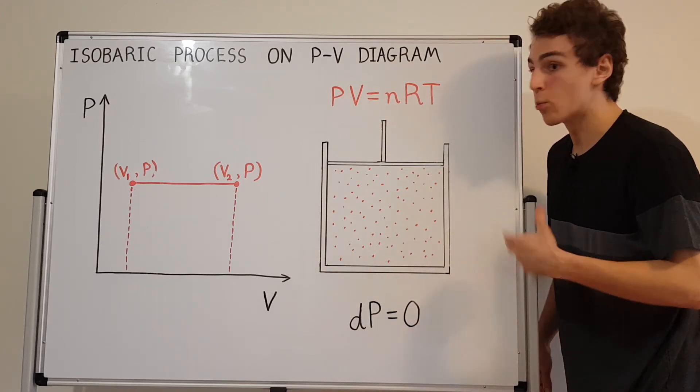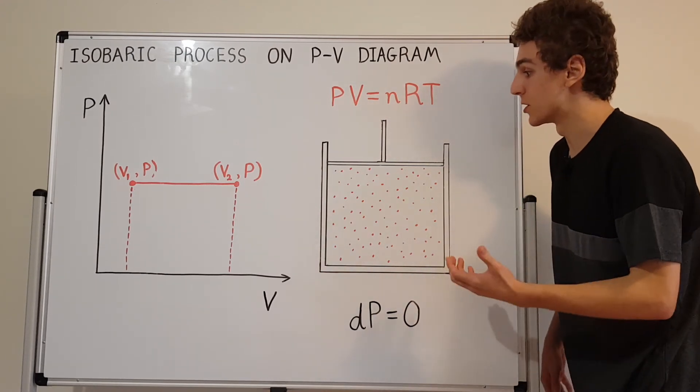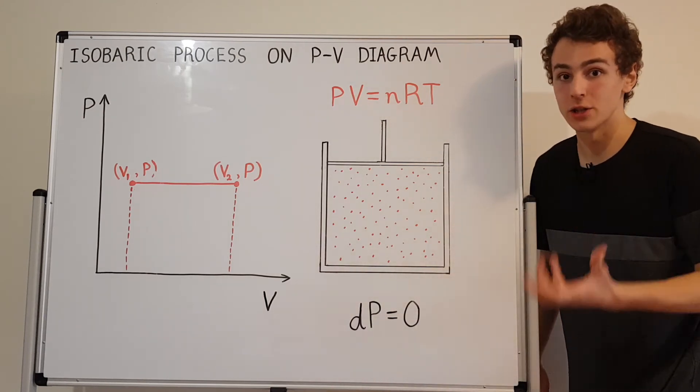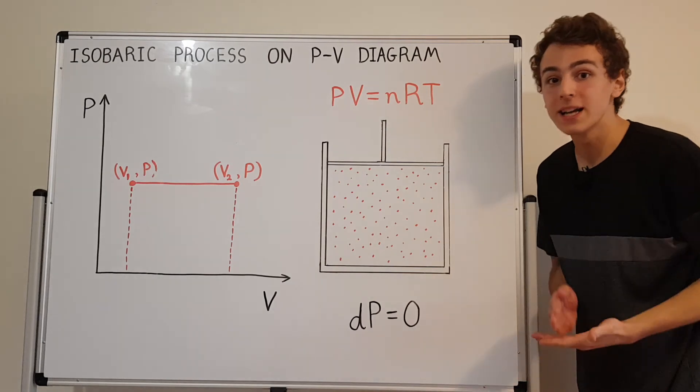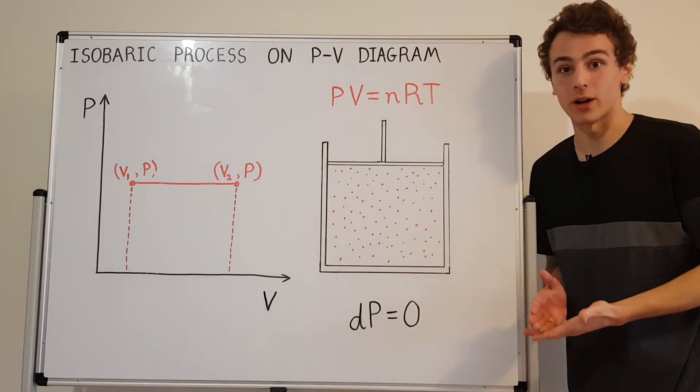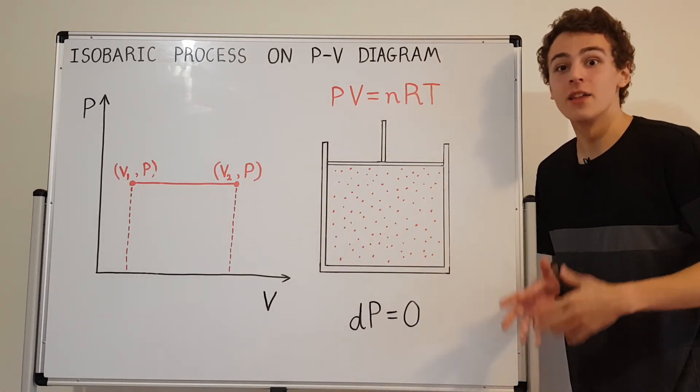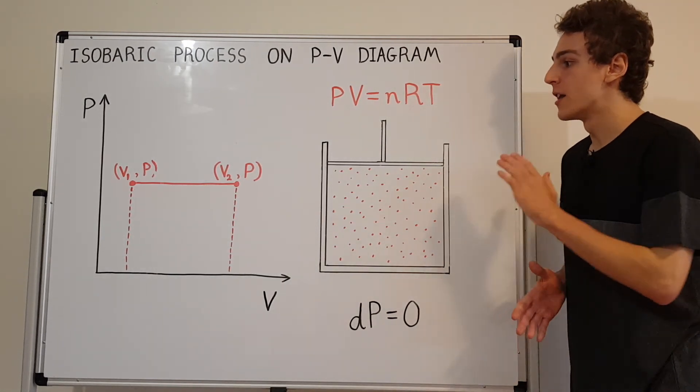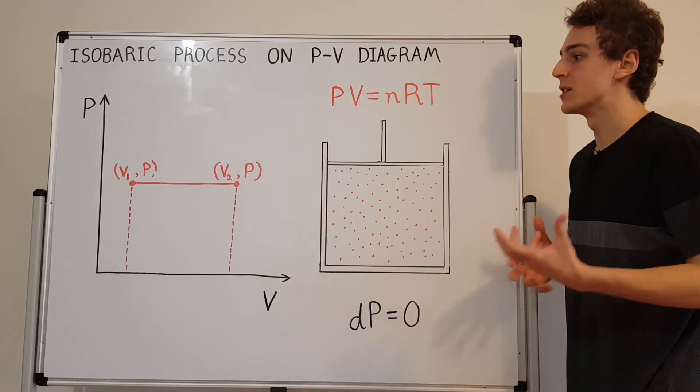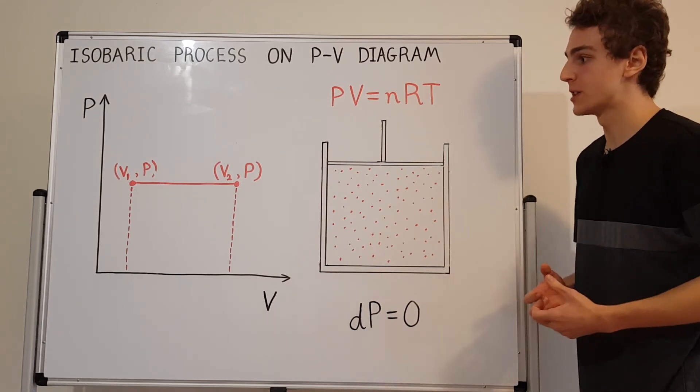The work is also free to change. Why? Because compression and expansion by definition means there is work. If the volume is changing, there is compression or expansion work. These are some important qualitative descriptions of isobaric processes.